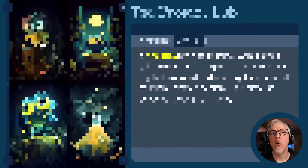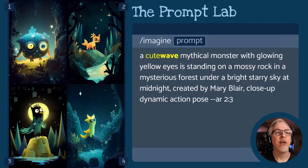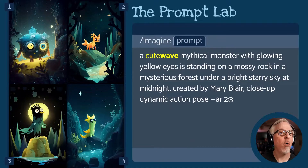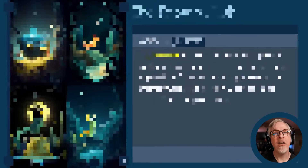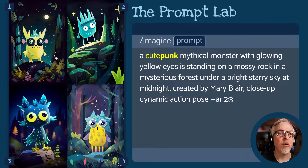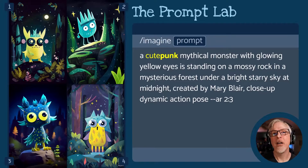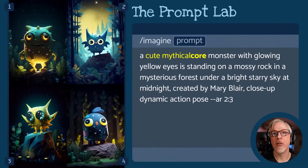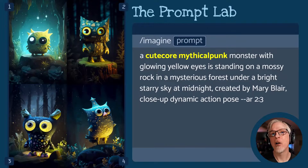Watch what happens when I change 'cute core' to 'cute wave.' Now you get more detail in the characters' textures and a lot more light being brought into the environment. Whereas core applied style, wave applies light. The final one — punk — gives you a bit of energy or edge, or 'punkness,' to the image. You can also apply these to other adjectives and mix and match them. So instead of 'cute punk mythical,' why not go with 'cute mythical core' or 'cute core mythical punk'?